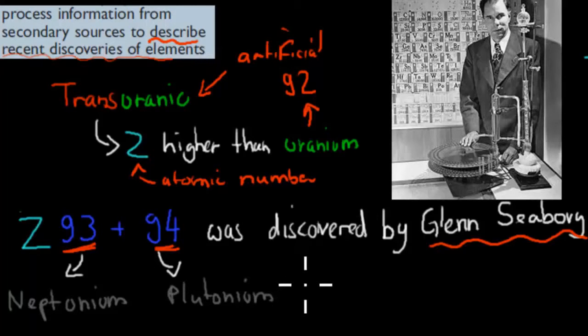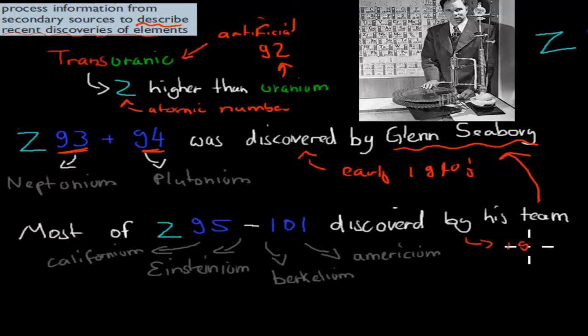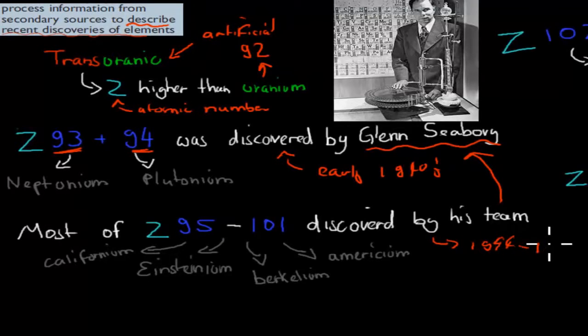They discovered neptunium and plutonium through neutron bombardment. If you remember, when you have uranium and you bombard it with a neutron, you can produce neptunium, and then neptunium decays to plutonium. That was all in the 1940s, early 1940s. Then he and his team went on a discovery rampage. They basically discovered lots of different elements.